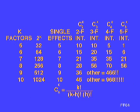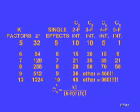Let's look at the number of runs created by a reasonable number of factors, say from 5 to 10. With 5 factors, there are 32 treatment combinations; 64 treatment combinations with 6; 128 treatment combinations with 7; and over 1,000 treatment combinations with 10 factors.